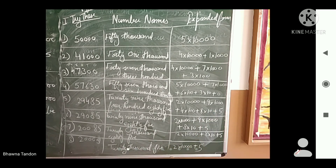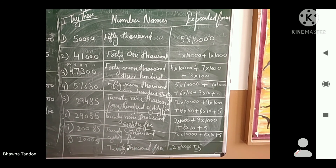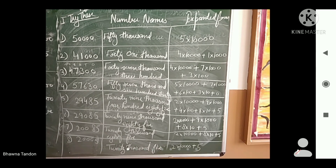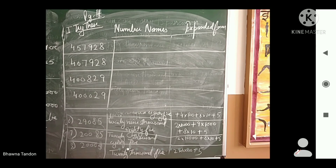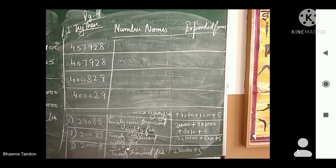This way you can write the number name or expansion for each number. There is no need to copy everything from the board — you can simply do your work and check from the board afterwards. Now we are given some 6-digit numbers, and since they are 6 digits, they will come in lakhs.